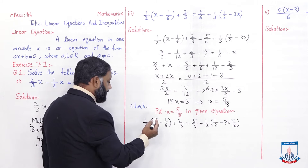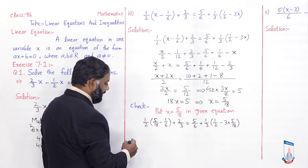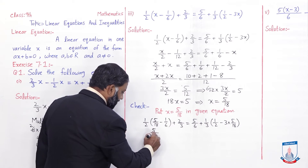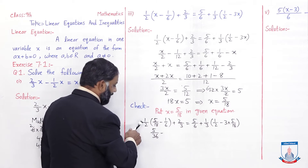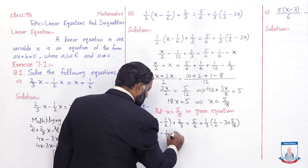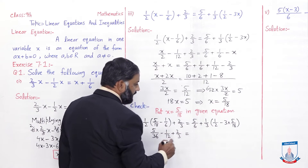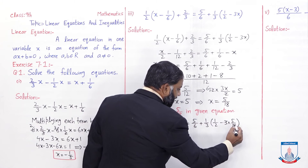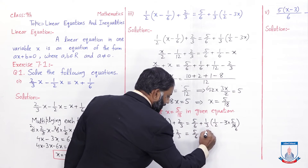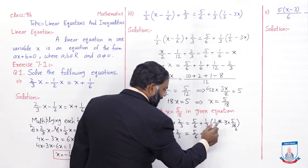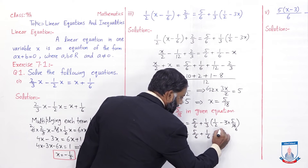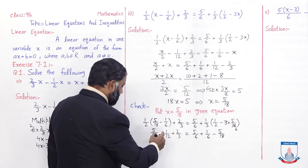Ab iska LCM lenge. Pehle multiply kar lein taake ek saath LCM liya ja sake. Isko multiply karenge: 1 times 5 over 2 times 18 equals 5/36. Minus 1/2 ko 1/6 se multiply karenge to 1/12 aa jayega. Plus 2/3 is equal to 5/6 se related cutting hogi. Plus 1/3 ko 1/2 se multiply karein to 1/6 aa gaya. Minus 1/3 ko 5/18 se multiply karein to 5/54... yeh 5 over 6 hai, 5/6 ko 1/3 se multiply karein to 5/18 aa jayega. Ab iska LCM lein.